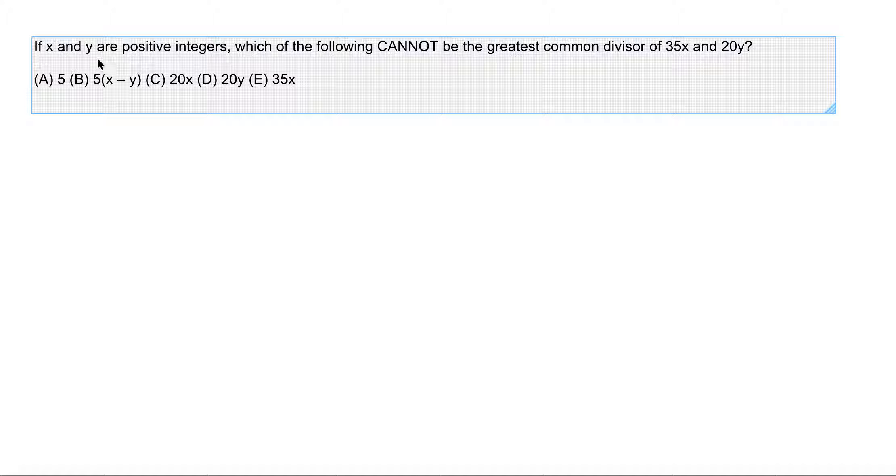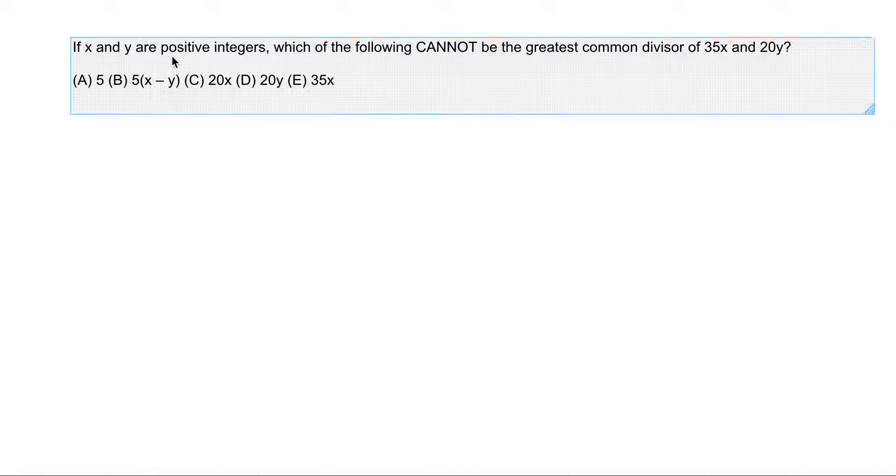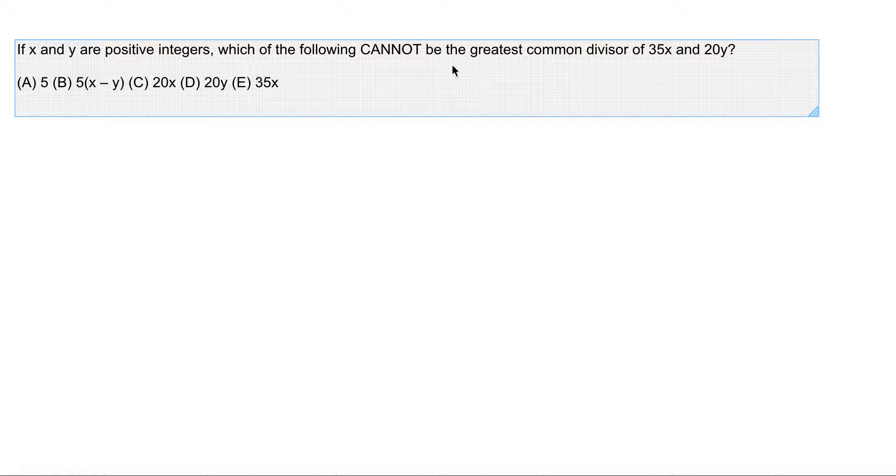This is probably a difficult question. The question says x and y are positive integers. Then which of the following cannot be the greatest common divisor of 35x and 20y? That's our question.